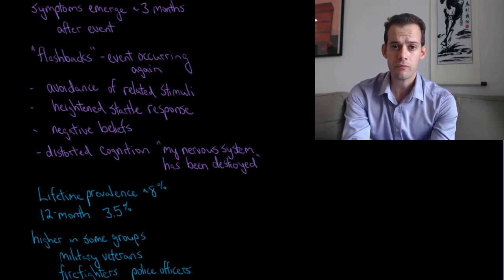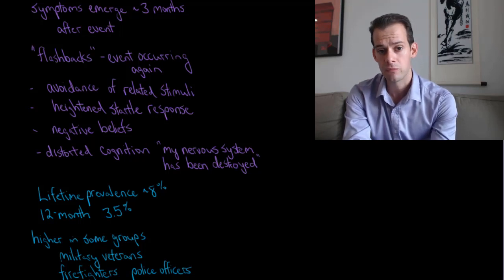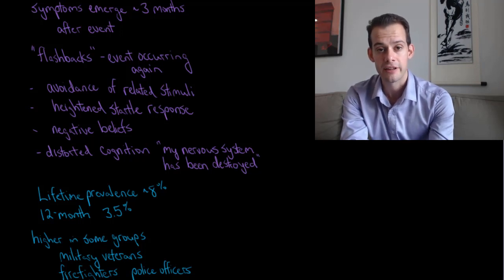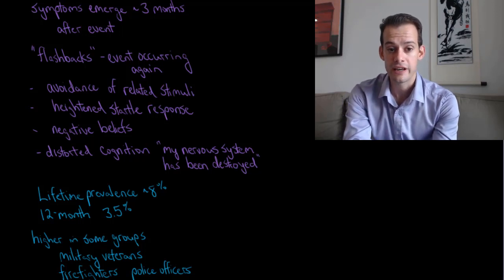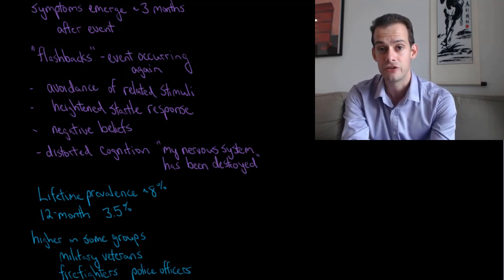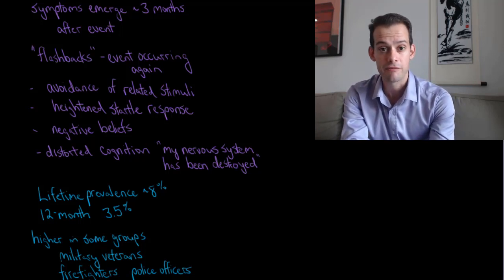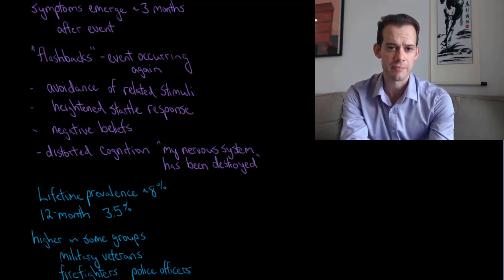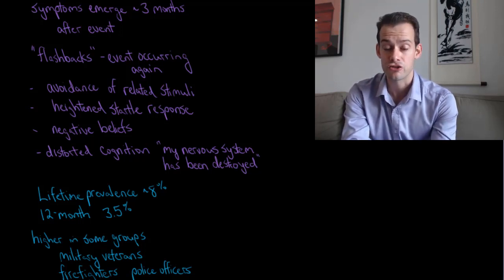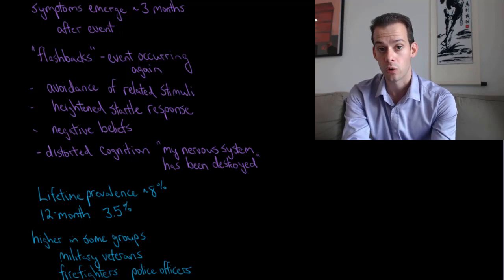Other symptoms include a behavioral symptom of avoidance of related stimuli — situations, people, or objects that remind the person of the traumatic event are avoided. We also see a somatic symptom of a heightened startle response, referring to a physiological change in the person's reactivity. And we see cognitive symptoms including negative beliefs and distorted cognitions, sometimes in the form of the patient saying something like 'my nervous system has been destroyed' — a form of exaggeration or catastrophizing.